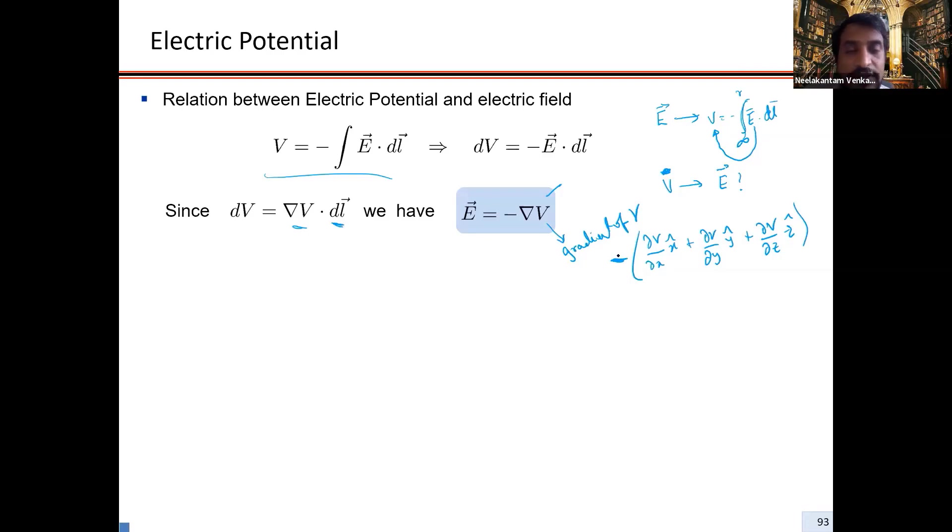The electric field is the negative gradient of potential. This should not be very surprising to you because the negative gradient of potential energy is the force. The gravitational force field is going to be the negative gradient of potential energy. It's the exact same thing here.